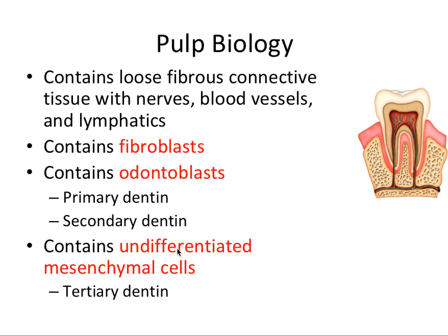The pulp also contains undifferentiated mesenchymal cells, which can differentiate into a specific type of cell called secondary odontoblasts. The confusing thing here is that secondary odontoblasts do not secrete secondary dentin — they actually form tertiary dentin to protect the pulp from injury. These undifferentiated mesenchymal cells are basically stem cells that can later divide and become new cells.